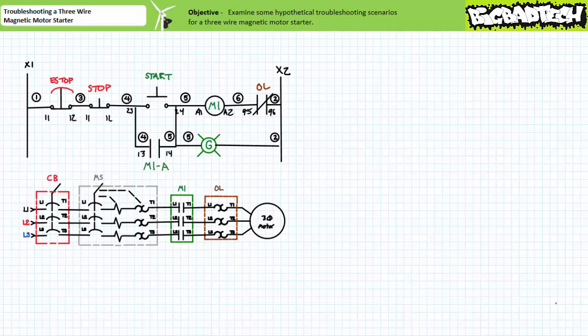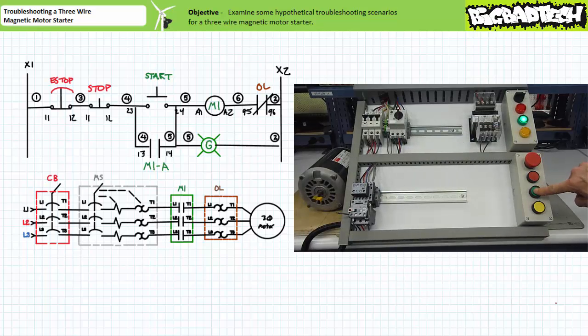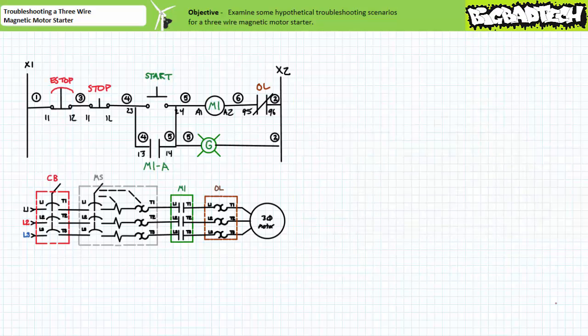Let's say the holding circuit provided by the normally open M1A auxiliary contact is not properly wired. When an operator presses and holds start, the motor starts. However, the moment the operator releases the start push button, the M1 contactor opens and the motor free spins to a halt. Quite obviously, this is the fault of an improperly established holding circuit that fails to maintain the last distorted state.